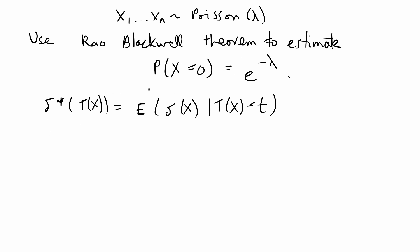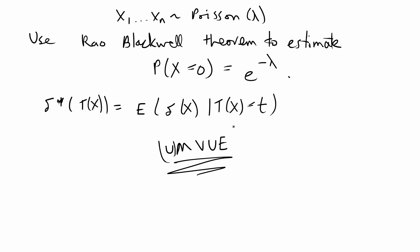Usually you'll learn about Rao-Blackwell first, and then later you'll learn about the uniformly minimum variance unbiased estimator, sometimes just called minimum variance unbiased estimator. One way of finding this category of estimators is by plugging in through the Rao-Blackwell theorem an unbiased estimator. When you plug in an unbiased estimator, you'll always get as the output the minimum variance unbiased estimator.